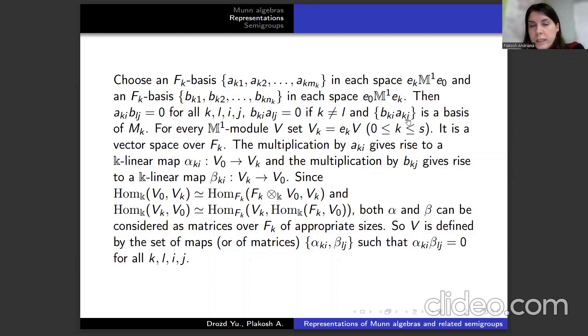For every M¹-module V, set Vₖ equals eₖ·V for k from 0 to s. It is a vector space over Fₖ. The multiplication by A gives rise to linear maps αₖᵢ and βₗⱼ. Since we have homomorphism isomorphisms, both α and β can be considered as matrices over Fₖ of appropriate size.